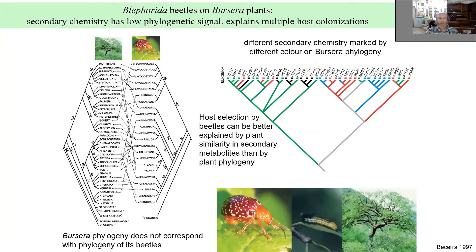This is illustrated by a study of Blepharida beetles on Bursera plants in dry tropical areas. Bursera is chemically defended. Looking at the phylogeny of Bursera and the phylogeny of beetles feeding on it, the trophic interactions are messy — the beetle phylogeny is not following the phylogeny of their host plants, and there are many host shifts.